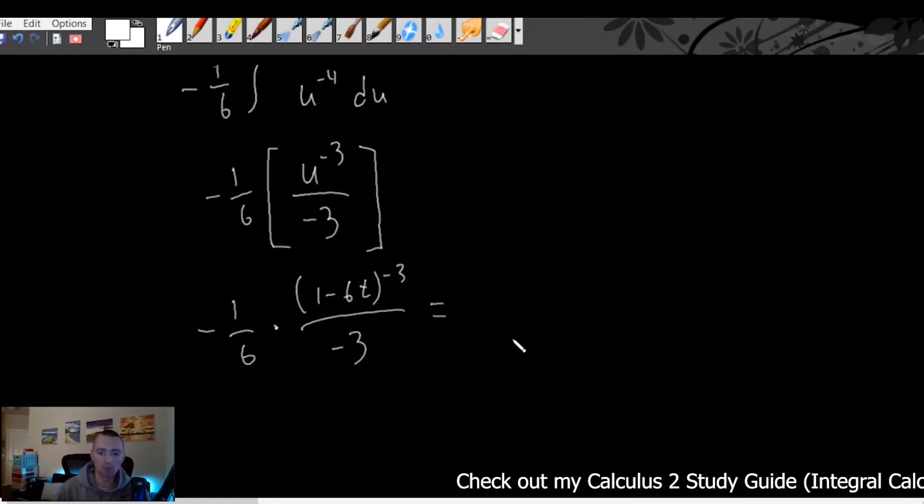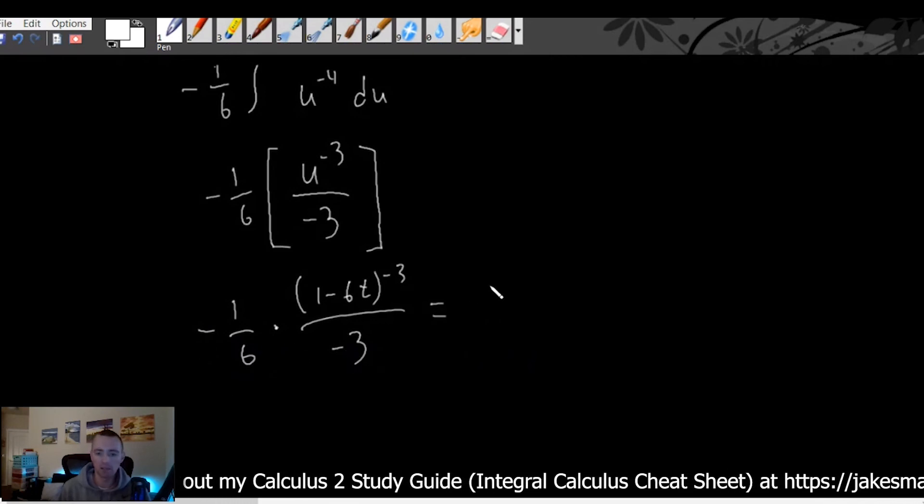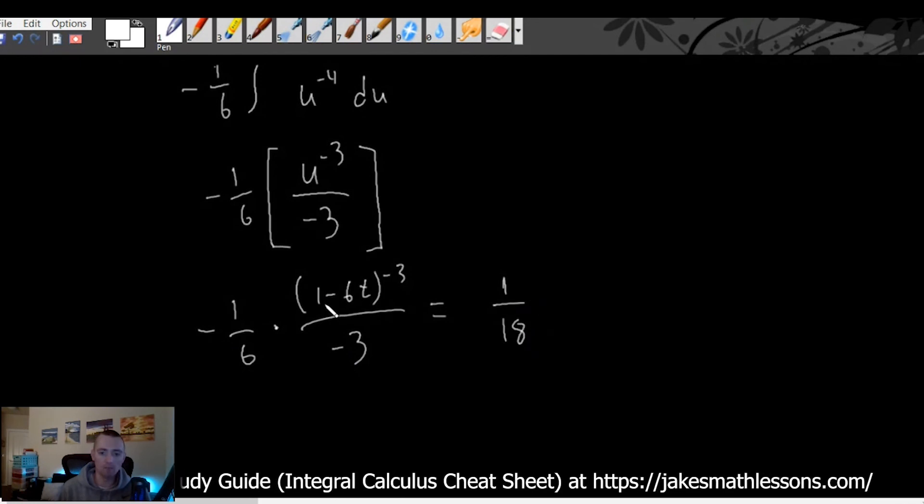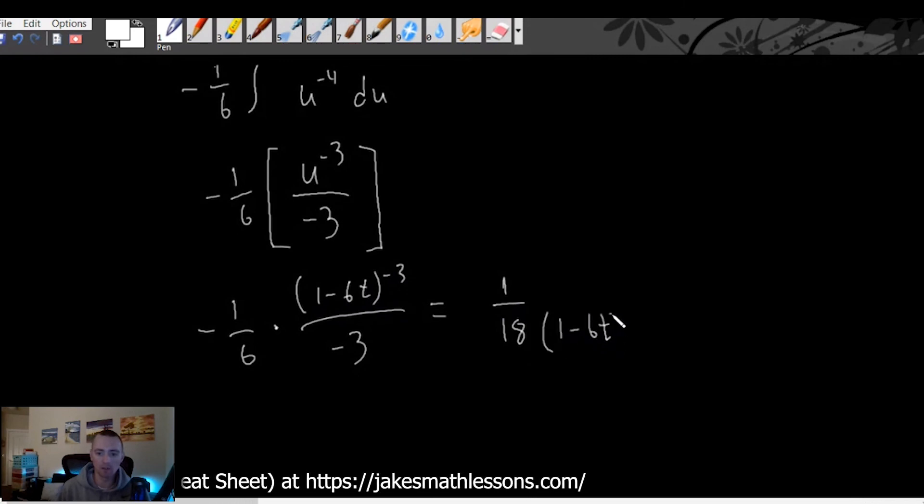Then really at this point we just need to simplify. So the negative one six and the negative three on the denominator, basically that's just going to be like one over 18, and then this (1 minus 6t) to the negative third would be the same as putting (1 minus 6t) to the positive third on the denominator.